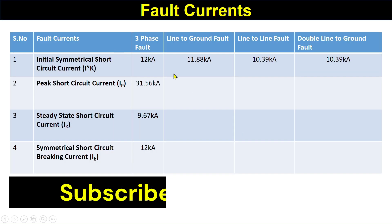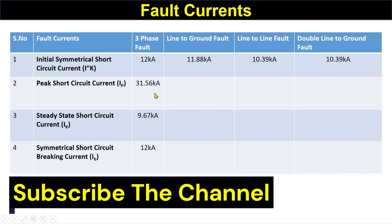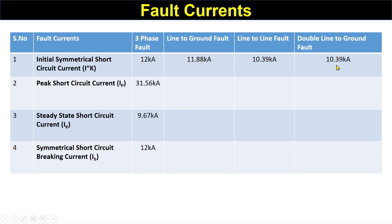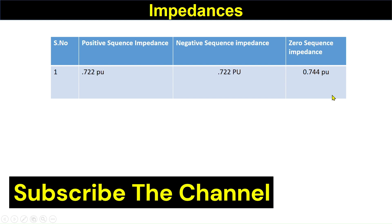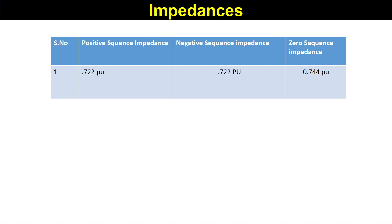These are the data we calculated manually. The three-phase fault current is calculated, along with the line-to-ground fault, line-to-line fault, and double line-to-ground fault. These results are from manual calculation and Excel calculation. We have also calculated the positive sequence, negative sequence, and zero sequence impedances and their values. Now we can run the same system in ETAP and see the differences between our hand calculations and the ETAP results.